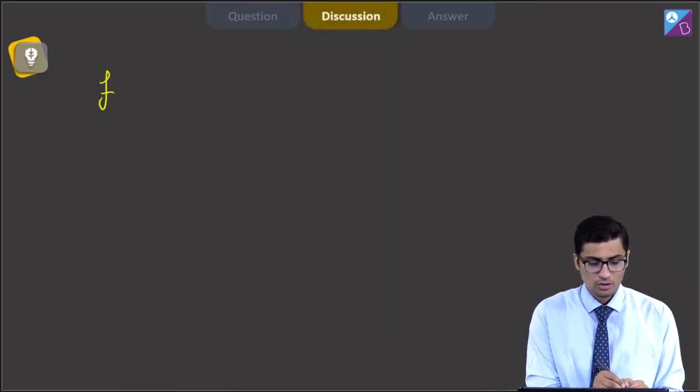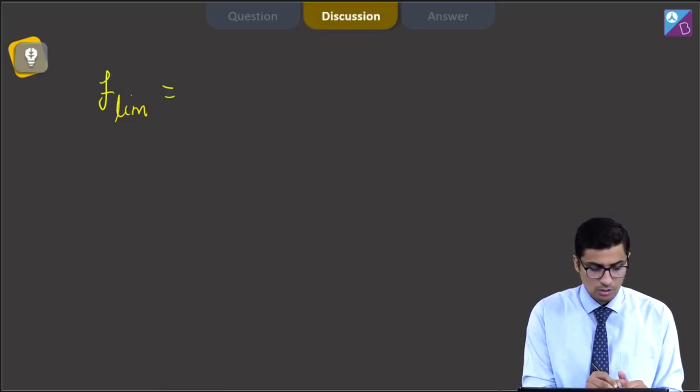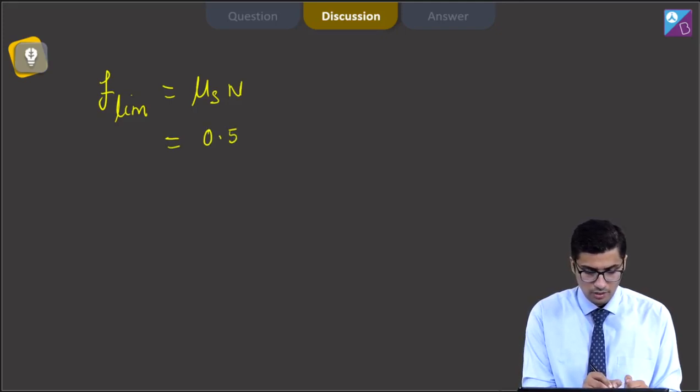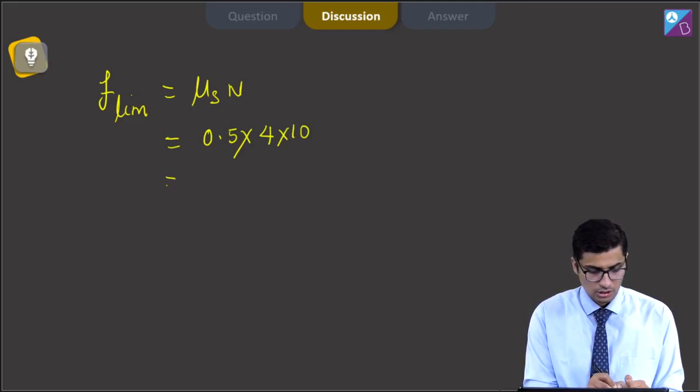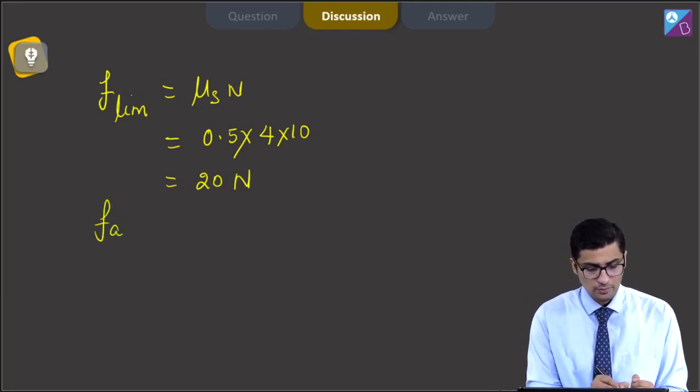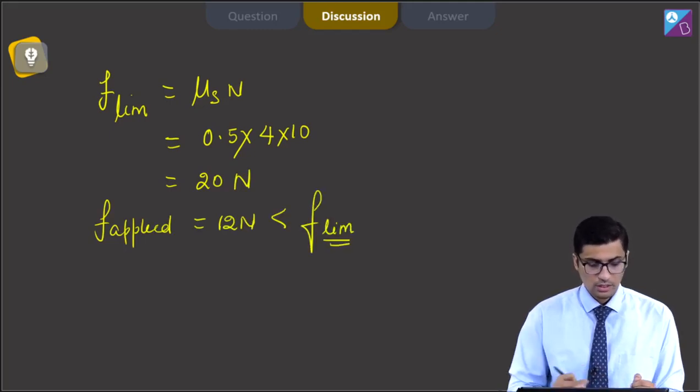Dear students herein, first of all, we will start by finding out the limiting value friction, which is equal to mu s times N, which is equal to 0.5 times 4 times 10. So, this will be equal to 20 N. Since the applied force is 12 N, that is F applied is equal to 12 N and it is less than the limiting value of friction.